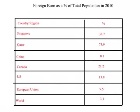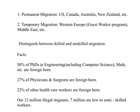As you go through this list, look at China — only 0.1% of the population is foreign-born. Compare this to the European Union at 9.5%, the US at about 14%, Canada at 21%, Singapore at 38.7%, and Qatar at 73.9%. Some countries have more migrants living in them and some have very few. It is not difficult to visualize the reasons why this happens.